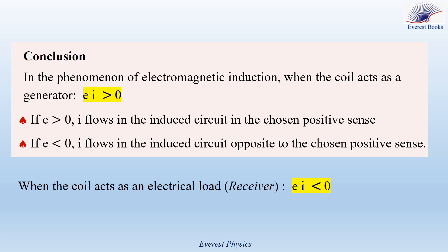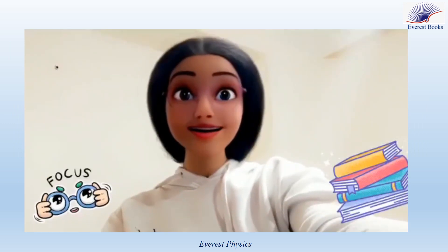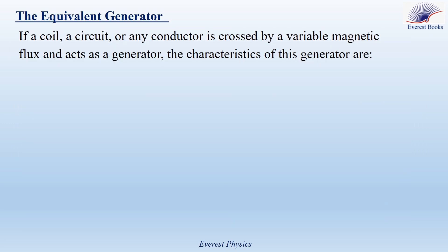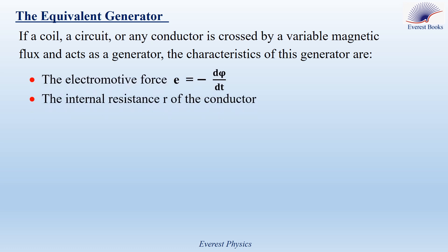Remark: when the coil acts as an electric load or receiver, or when it receives electrical energy, then E times I should be negative. Focus — this is important. The equivalent generator: if a coil, a circuit, or any conductor is crossed by a variable magnetic flux and acts as a generator, then the characteristics of this generator are the electromotive force E equal to minus dΦ/dt, and the internal resistance R of the conductor, which is responsible for the energy loss.